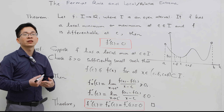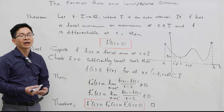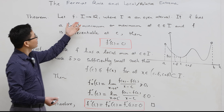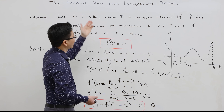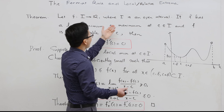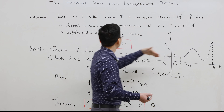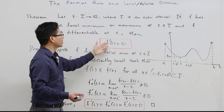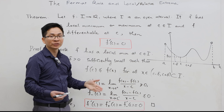Let me talk about the proof of Fermat's rule. Recall that Fermat's rule says: let f be a function defined on an open interval I. If f has a local minimum or maximum at c in I, and f is differentiable at c, then the derivative of f at c is equal to 0.